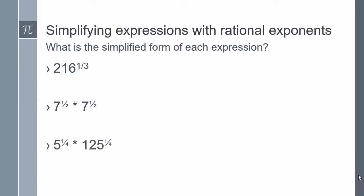In this example, we are simplifying expressions with rational exponents. Remember oi. I'm going to change 216 to the power of 1 third into a radical. The numerator is my exponent and the denominator is the index of my radical. So I can write this as the cube root of 216 raised to the power of 1, which is just 216. Taking the cube root of 216, we get 6.